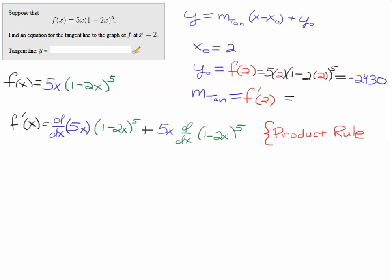Then, here the derivative of 5x is simply 5, but to compute the derivative of this term here, we're going to need the chain rule. And that means we bring the 5 down, multiply by 5, subtract 1 from the exponent, we get 4. And then we have to take the derivative of the inside, which is 1 minus 2x.